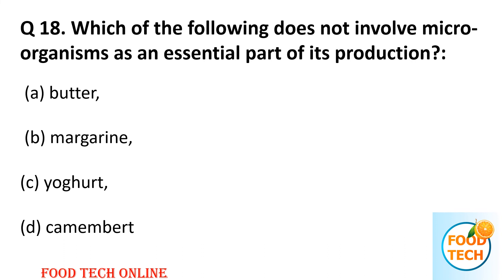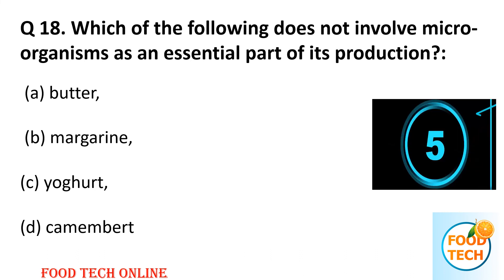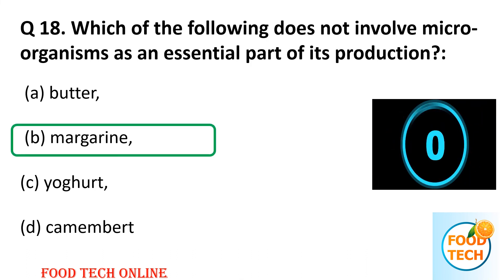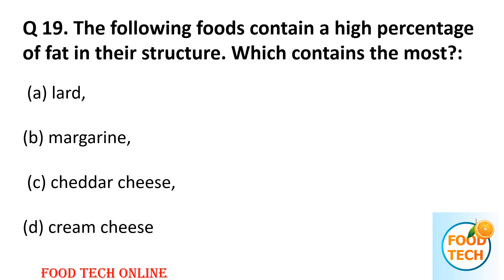Question 18: Which of the following does not involve microorganisms as an essential part of its production? A: butter, B: margarine, C: yogurt, D: Camembert. Answer: B, margarine.